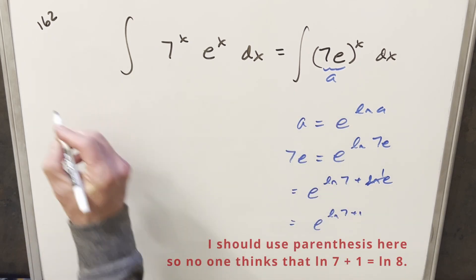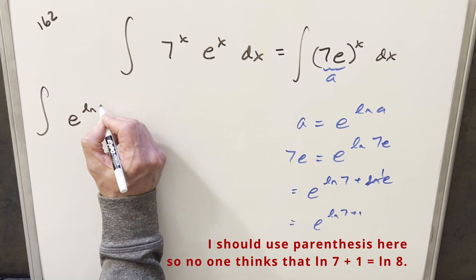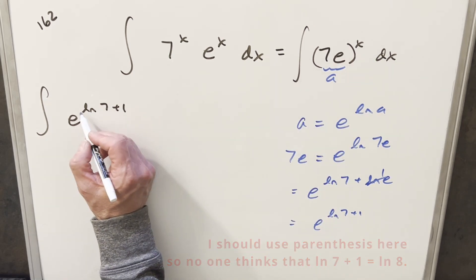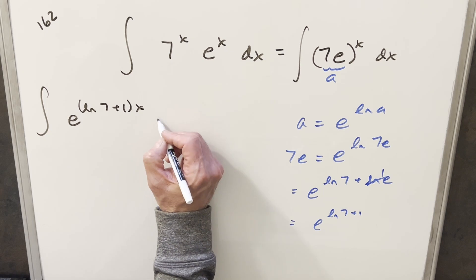Taking this and putting it back into our integral, we have e to the ln 7 plus 1. But I've got this x in the exponent. What I can do is distribute that in and write it like this, dx.